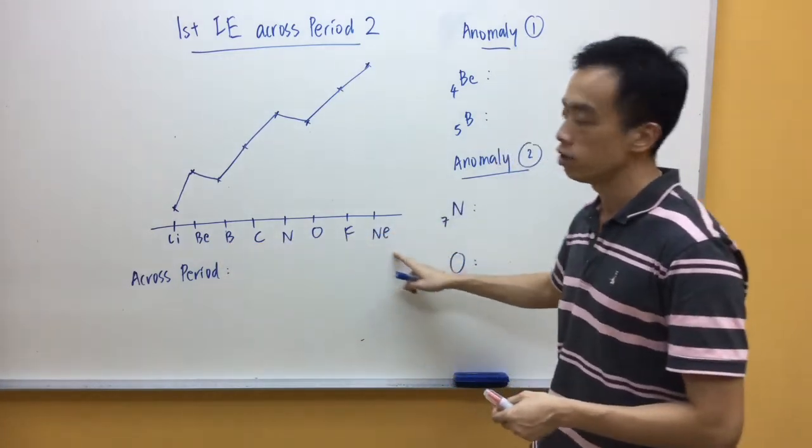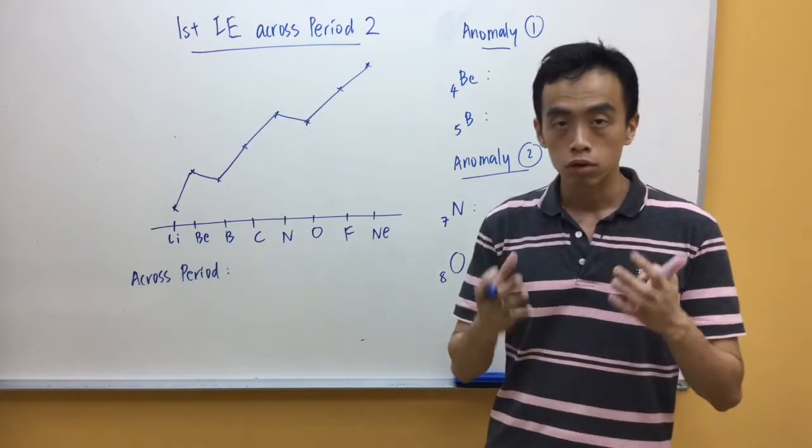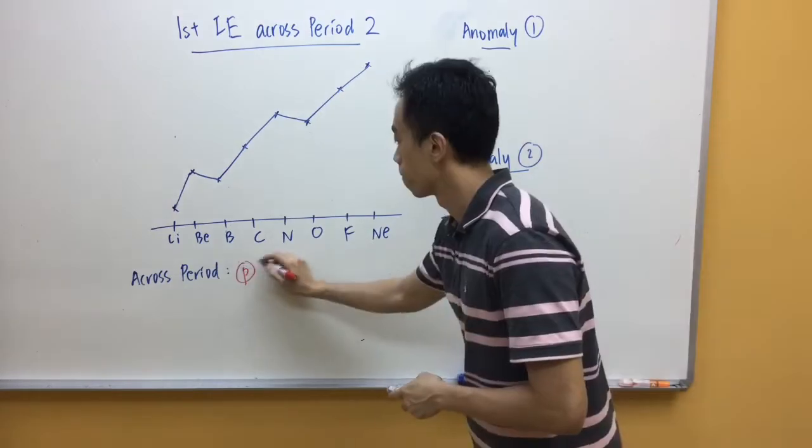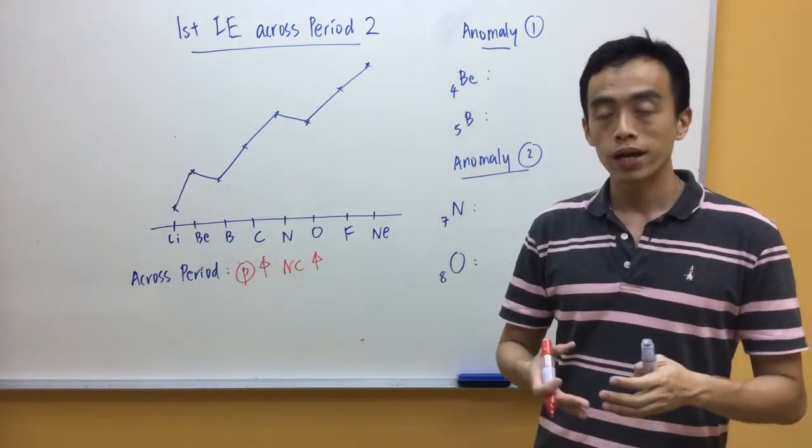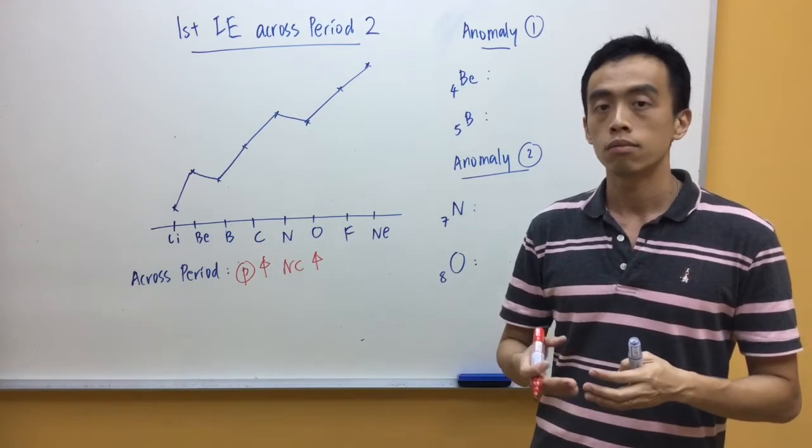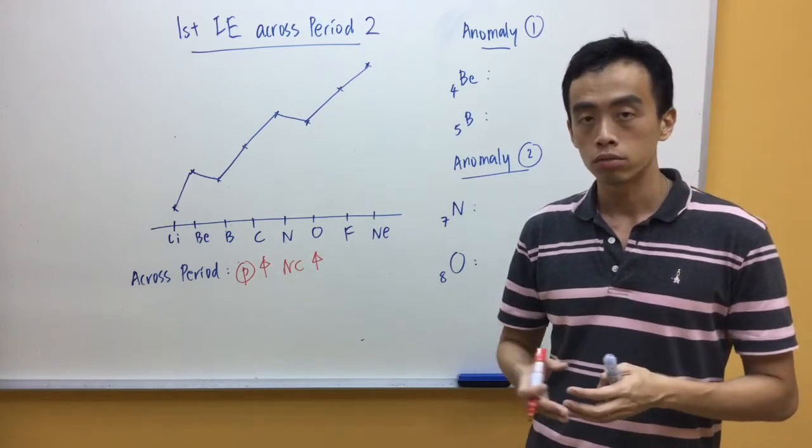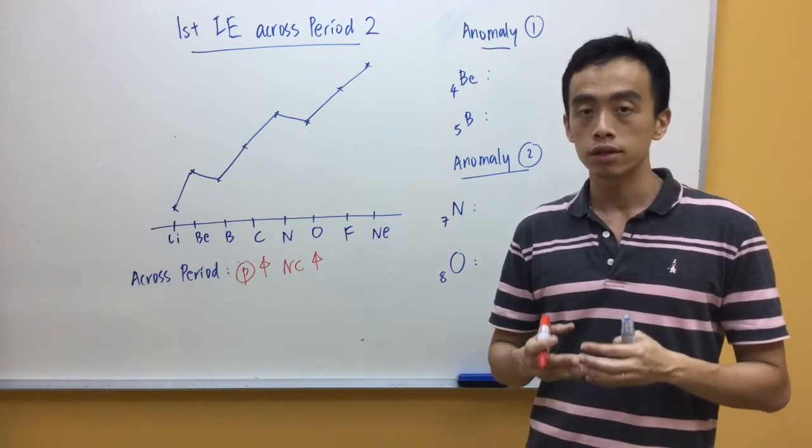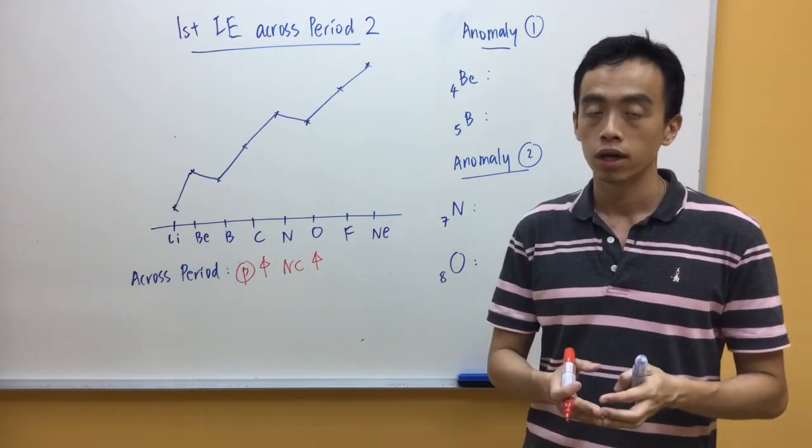Now, of course, across the period there is an increase in the proton number, so therefore nuclear charge increases. Now, we're also adding an electron to the same principal quantum shell, so therefore the number of inner shells stays the same, and the shielding effect remains constant.